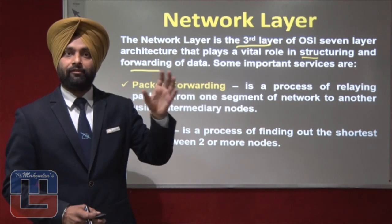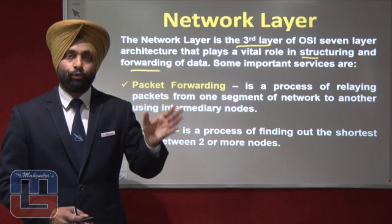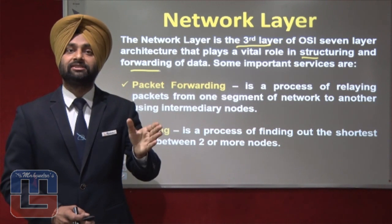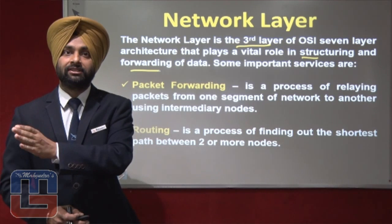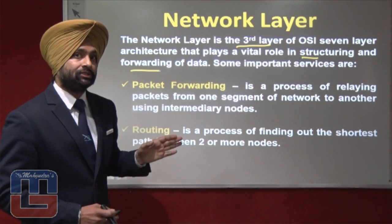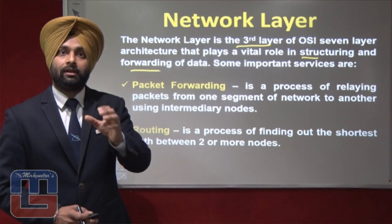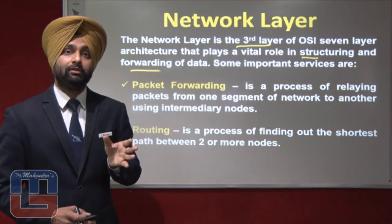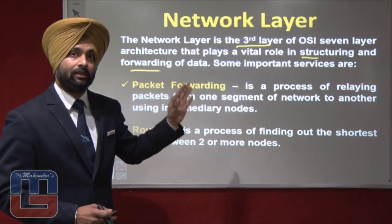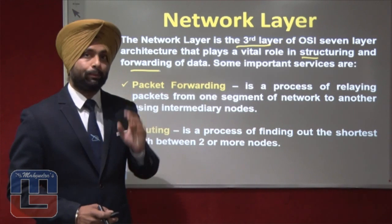When we divide a large network into smaller segments — say segment A and segment C — the source node in segment A forwards a data packet to a destination node in segment C. The intermediary nodes between the source and destination help transmit and forward the data packets to the destination.